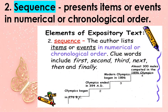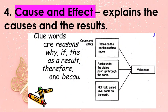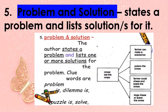Number 2: Sequence — presents items or events in numerical or chronological order. Number 3: Comparison and contrast — explains how two or more things are alike or different. Number 4: Cause and effect — explains the causes and the results. Number 5: Problem and solution — states a problem and lists solutions for it.